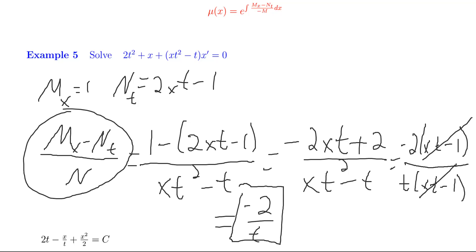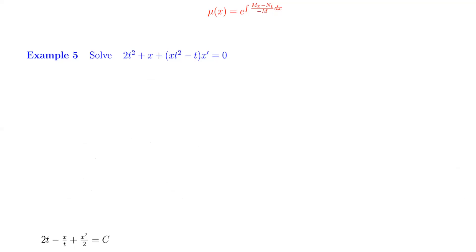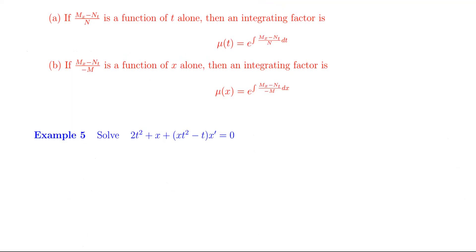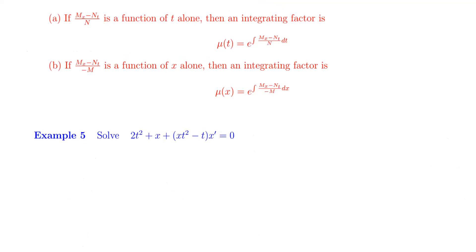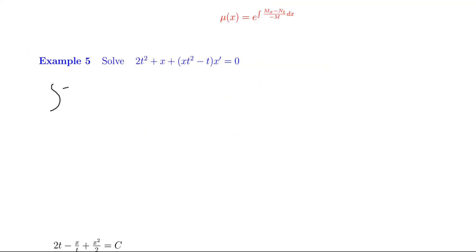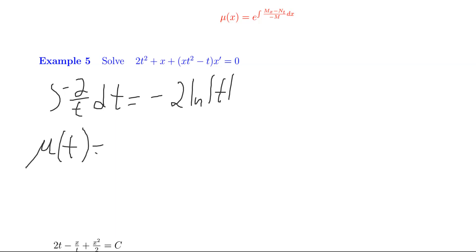Since that expression is a function of t alone, the integrating factor is e raised to the integral of that expression. The integral of negative 2 over t with respect to t is negative 2 ln|t|. So our integrating factor is e raised to negative 2 ln t, which equals t to the negative second power.